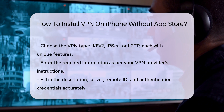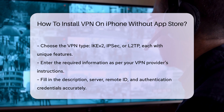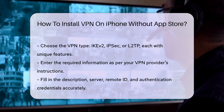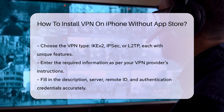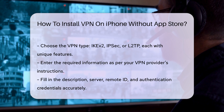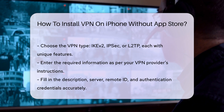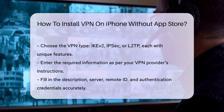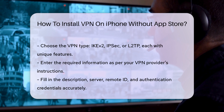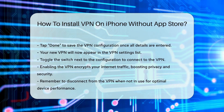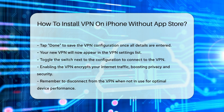Be sure to double-check these details for accuracy. Once you have entered all the necessary information, tap on Done to save your configuration. You will now see your VPN listed in the VPN settings. To connect, simply toggle the switch next to the VPN configuration you created. When you enable the VPN, your internet traffic will be encrypted, enhancing your privacy and security.